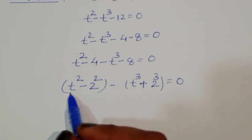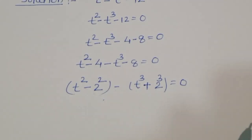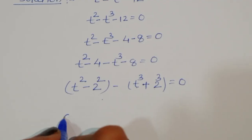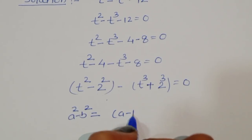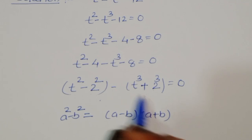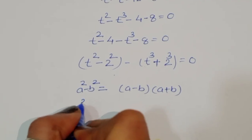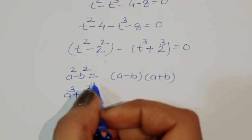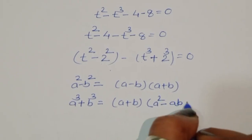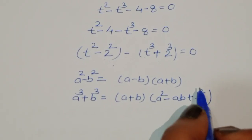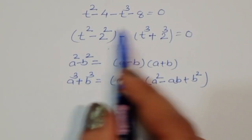We can see that t squared minus 2 squared is in the form of a squared minus b squared, and the remaining part is in the form of a cubed plus b cubed. The formula for a squared minus b squared is (a minus b)(a plus b), and the formula for a cubed plus b cubed is (a plus b)(a squared minus ab plus b squared).